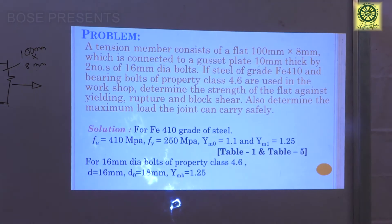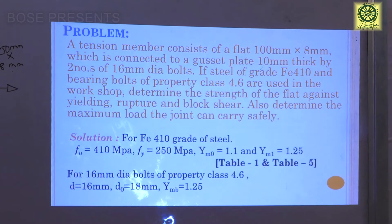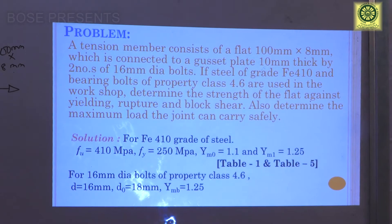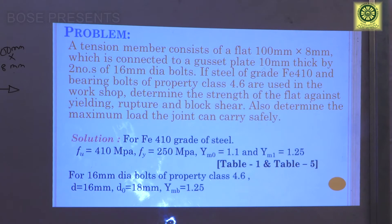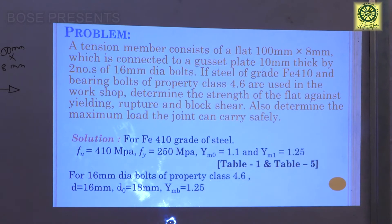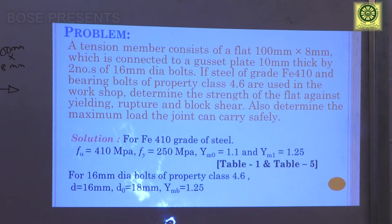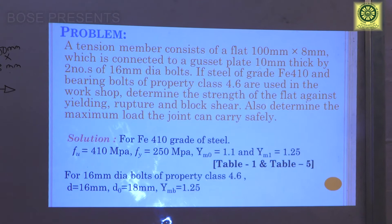We will now discuss an analysis problem on tension members. A tension member consists of a flat 100 mm × 8 mm connected to a gusset plate 10 mm thick by two 16 mm diameter bolts. The steel grade is FE 410 and bearing bolts of property class 4.6 are used. Determine the strength of the flat against yielding, rupture, and block shear, and also determine the maximum load the joint can carry safely — that is, the minimum of the bolt strength and plate strength.